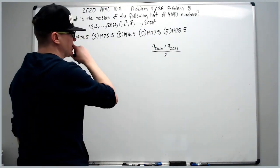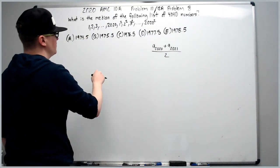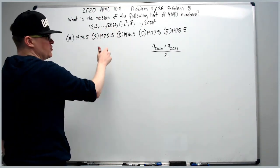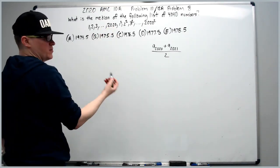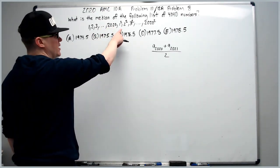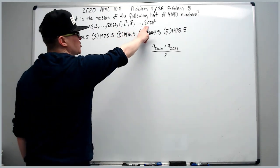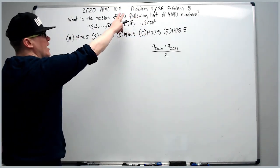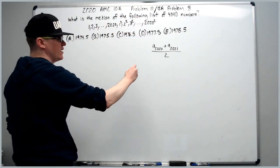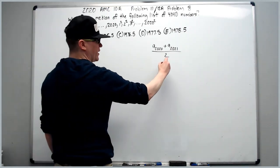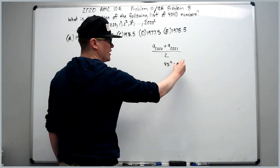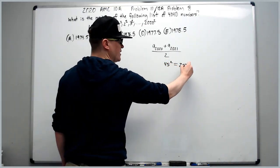So how are we going to get that? If we take the first 2020 terms, there are obviously 2020 of them. How many of these perfect squares though are actually before 2020? Well, at a quick calculation, 45 squared is 2025.